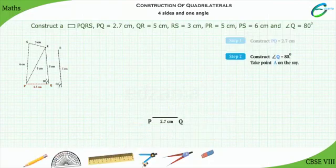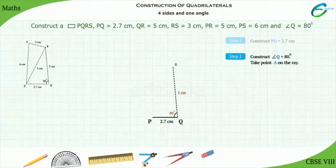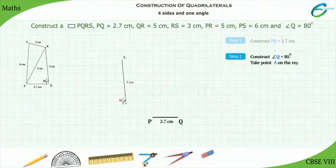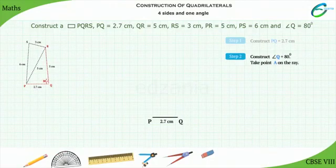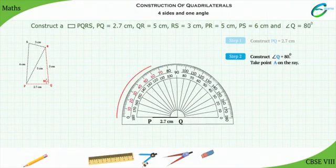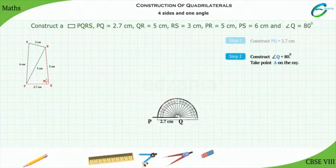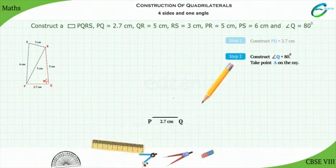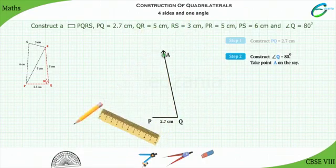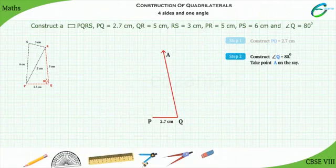Step 2: We know that the measure of angle Q is given as 80 degrees. Placing the protractor on point Q, draw an angle of 80 degrees making ray QA such that angle AQP is equal to 80 degrees.